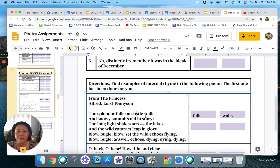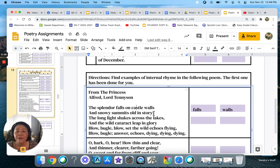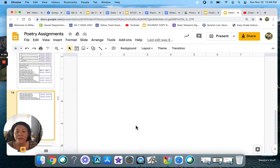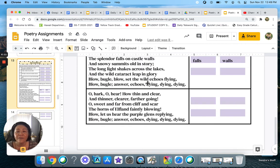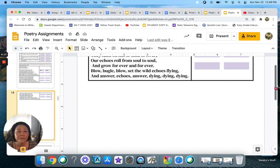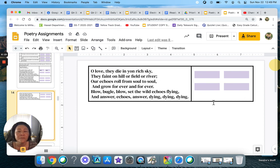The splendor falls on castle walls. See how it is an internal rhyme. It has this alls and alls and falls and walls, and they're in the same line, falls, walls. And so you're going to find another set in this section of the poem. Then you're going to find two in this section of the poem. And then you will go to the next slide and find two in this section of the poem.